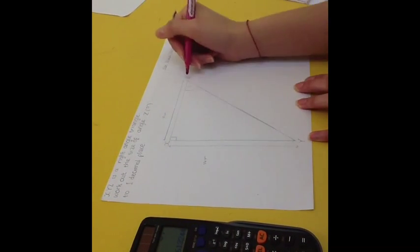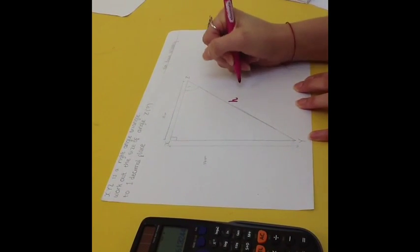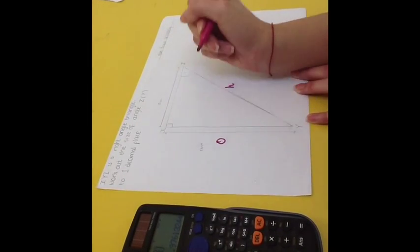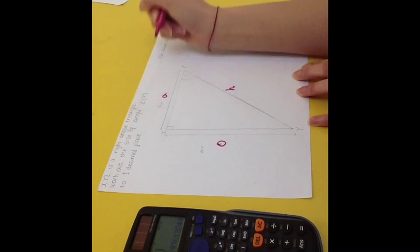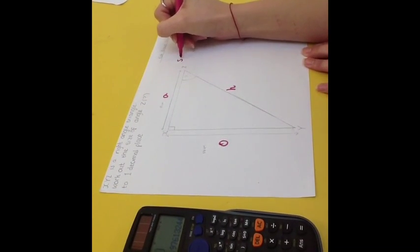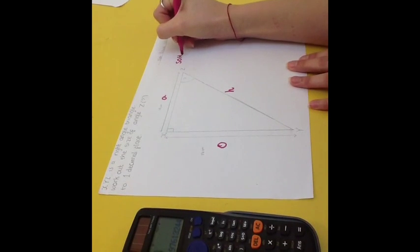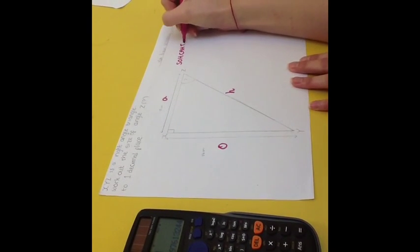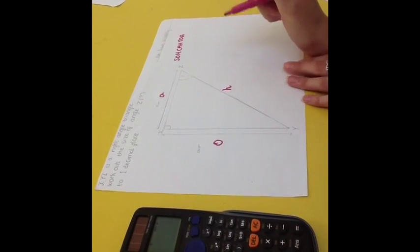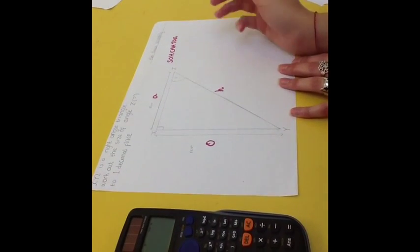And again, this is the longest side. So, you label it h. The angle is here. So, the opposite side— This is o. And the remaining side is a. Now, you write out the— You write out Sokato again.